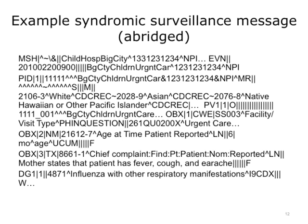Imagine a child is brought into an urgent care center with a fever, cough, and earache, and the doctor diagnoses influenza. A message is generated signaling that the visit occurred and provides de-identified information about the patient, as well as information about the reason why they visited the urgent care center and information about the condition. The message is formatted according to the PHIN messaging guide for syndromic surveillance.